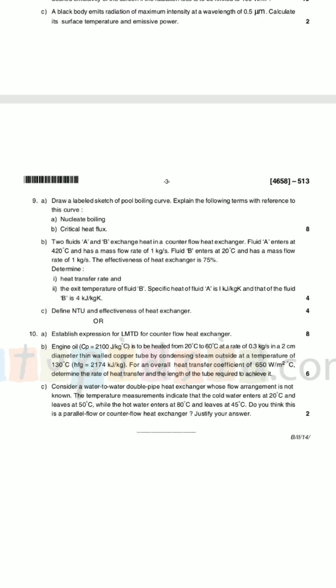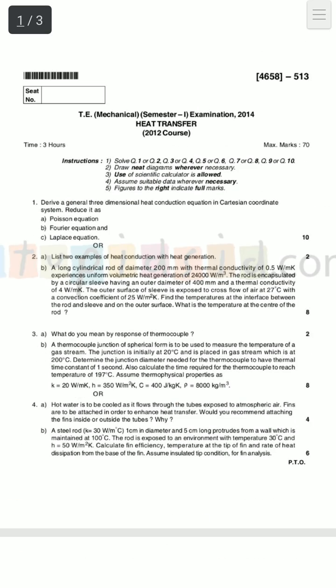Question number ten has 8 marks theory and 8 marks numerical, but question ten C was very easy — just find the temperature. I advise you to solve question nine A and nine C first, then go for question nine B if you can. If not, don't worry — you've already passed heat transfer. Question nine A and nine C are done. This is what the end-semester heat transfer paper of University of Pune looks like — 55 marks theory. Let's see another paper.